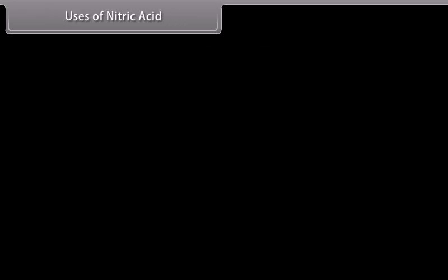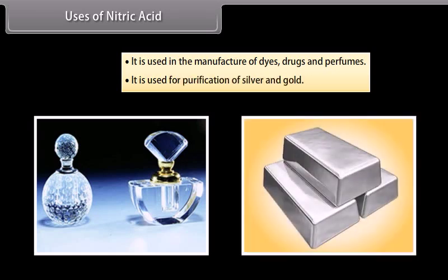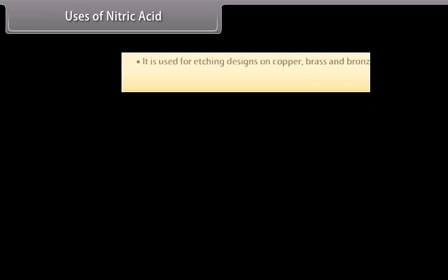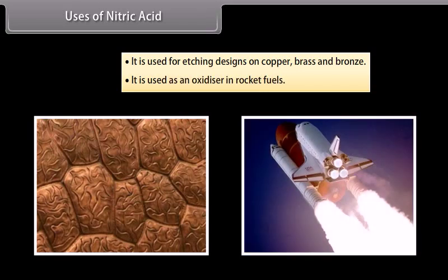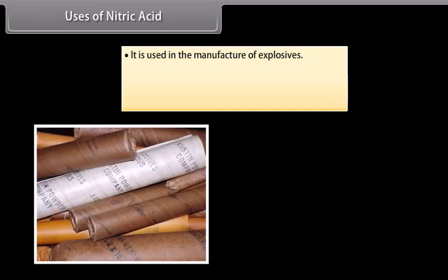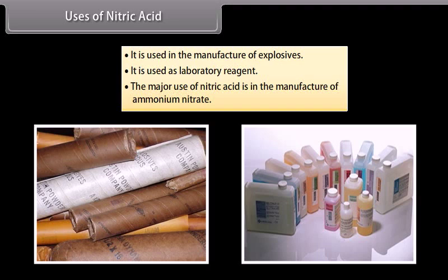The important uses of nitric acid include: manufacture of dyes, drugs and perfumes; purification of silver and gold; etching designs on copper, brass and bronze; use as an oxidizer in rocket fuels; manufacture of explosives; use as a laboratory reagent. The major use is in the manufacture of ammonium nitrate.